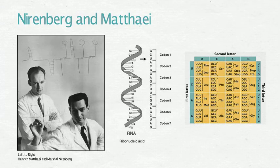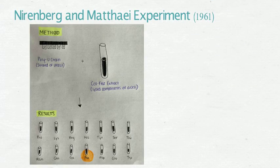Nirenberg and Matthaei were the first scientists to determine that there was a specific RNA sequence that coded for a specific amino acid. In their 1961 experiment, Nirenberg and Matthaei combined the homopolymer poly-U with free cell extract to determine which amino acid was incorporated in the poly-U chain.